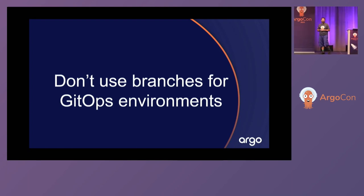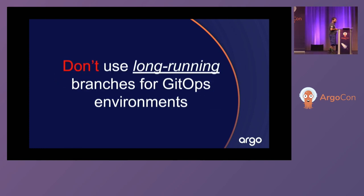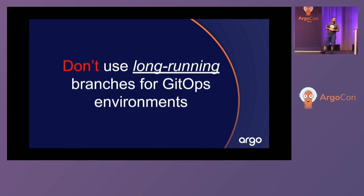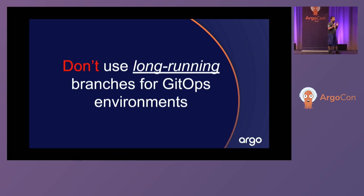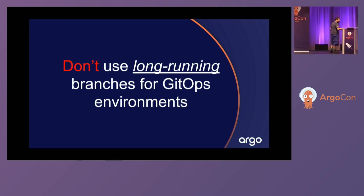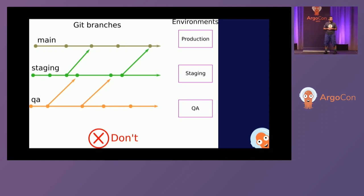I'll give you a starting point by covering what not to do first, then what you should do. Don't use branches for GitOps environments — more specifically, don't use long-running branches. Short-lived branches are fine: create a feature branch, test your feature, create a pull request, merge it. That's perfectly okay. That's not what I'm talking about.